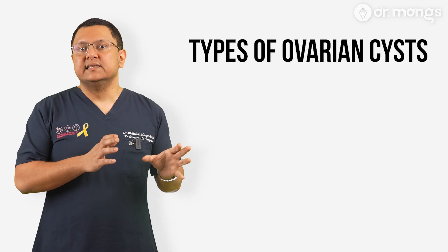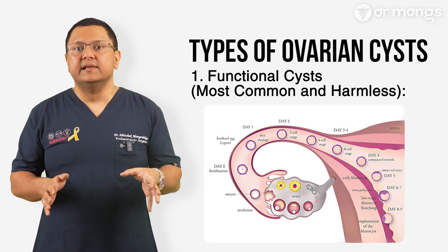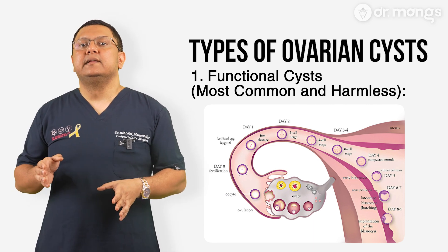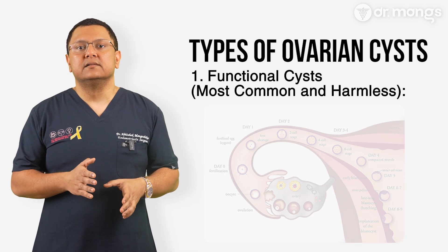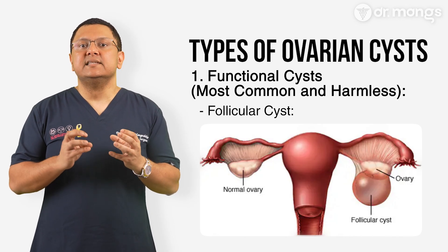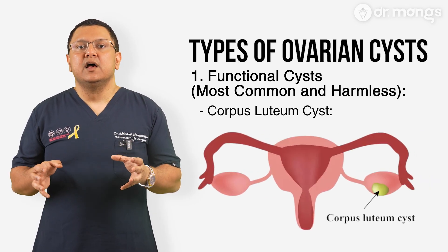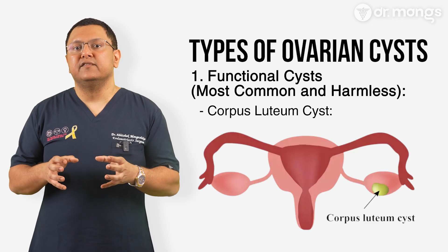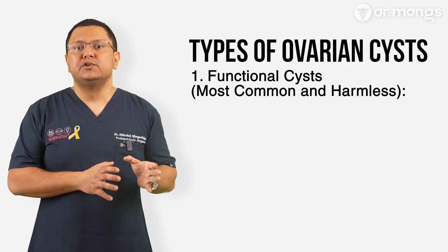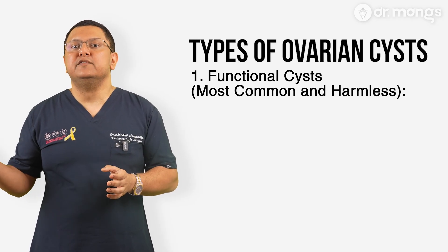Not all ovarian cysts are the same. Functional cysts are the most common and harmless. These develop as part of the normal ovulation process and typically disappear within a few menstrual cycles. Follicular cysts form when a follicle which contains an egg doesn't release the egg as expected. Corpus luteum cysts form after ovulation if the follicle doesn't dissolve properly. Functional cysts usually don't require treatment unless they grow very large, cause symptoms, or persist beyond a few cycles.